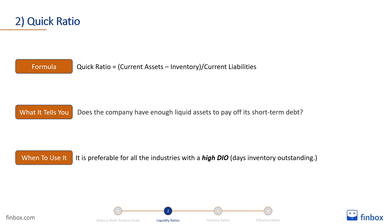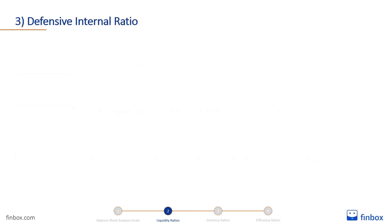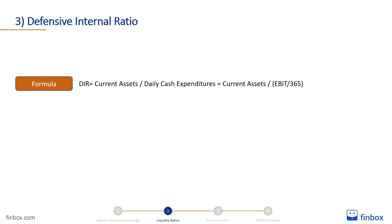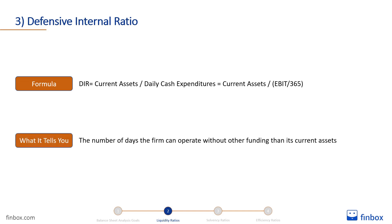You can find out if your company has an adequate quick ratio by comparing it to other companies in the industry with the same process used previously. The defensive interval ratio is equal to current assets divided by daily cash expenditures — that is, EBIT divided by the number of days in a year. The defensive interval ratio, or DIR, indicates how many days the company can pay its daily cash expenses without other funding than its current assets. This is one of the best balance sheet ratios for liquidity analysis because it provides the analyst with the exact number of days the firm can operate without seeking external funding.